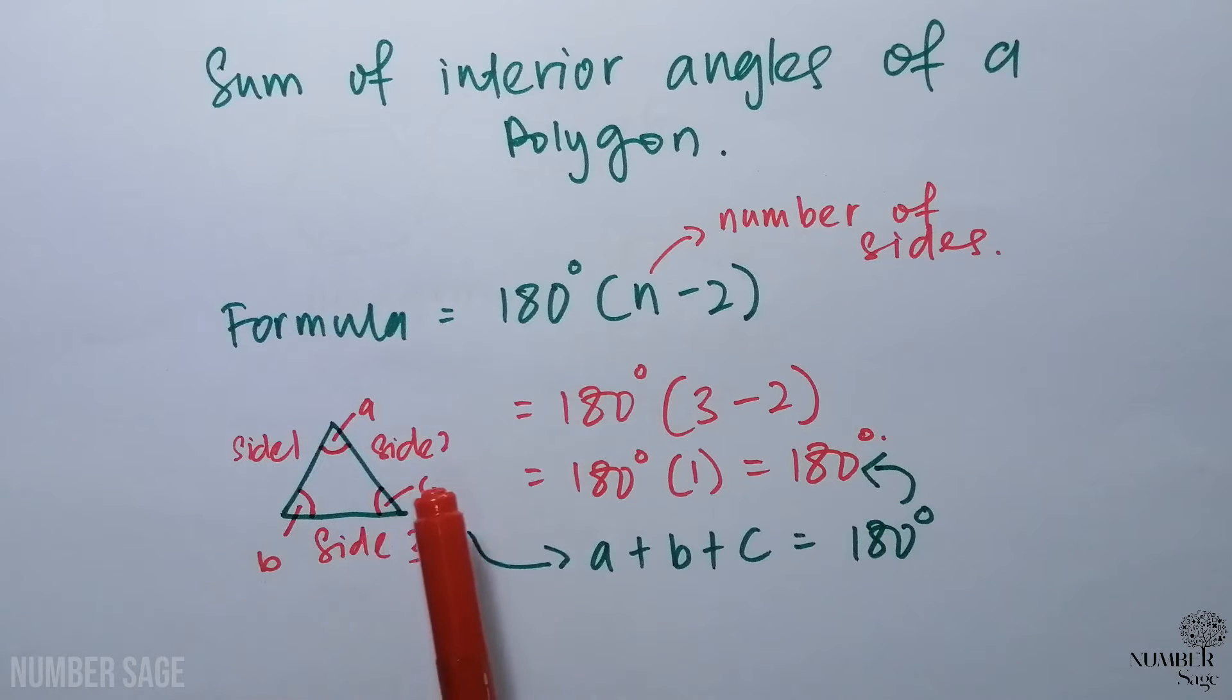Hence indicating the interior angle, which is value a, b, and c. When we sum all these up, it will give us a value of 180, which is equivalent to what we found using the formula.